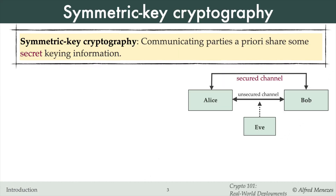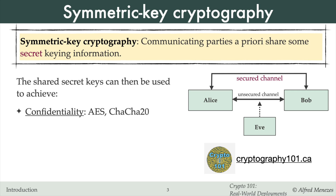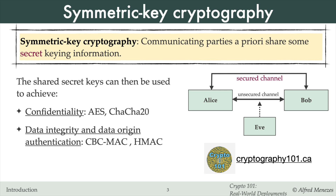I'll begin by summarizing the fundamental cryptographic building blocks we'll use. For a deeper dive, check out my Crypto 101 Building Blocks course, and also my Kyber and Dilithium course for quantum-safe cryptography. In symmetric key cryptography, the two communicating parties Alice and Bob share a secret key. They establish this key by communicating over a secured channel, and later use it to communicate securely over an unsecured channel, perhaps by using AES or ChaCha20 for confidentiality, CBC-MAC or HMAC for data integrity and message authentication.